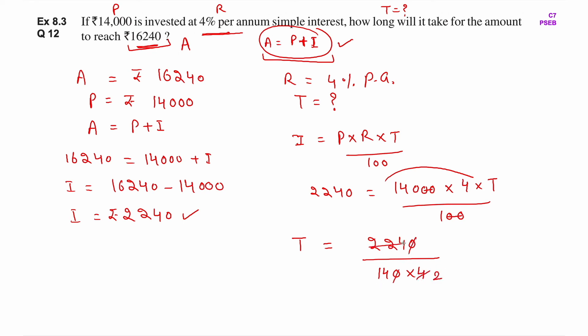Canceling the trailing zeros and simplifying: 56 and 14 cancel to give 4. So T equals 4 years.